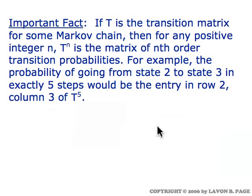The key fact is a straightforward generalization of what we were talking about in the previous video. T squared was what we were looking at there, and we were seeing that T squared was the matrix of second-order transition probabilities. For completely analogous reasons, T raised to an arbitrary power n is the matrix of nth order transition probabilities.